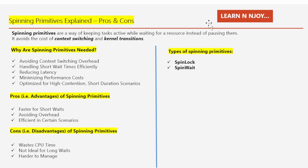So why are spinning primitives needed? In regular programming, when a task or thread can't proceed because the resource is busy, it might get paused and then resume when the resource is free. However, this pausing and resuming takes time and involves a process called context switching, which adds overhead and slows down the program. In some cases, especially when the wait time is very short, it's faster to keep the task busy — that means spinning — instead of putting it to sleep and then waking it up. Spinning primitives allow faster access when the resource becomes available.